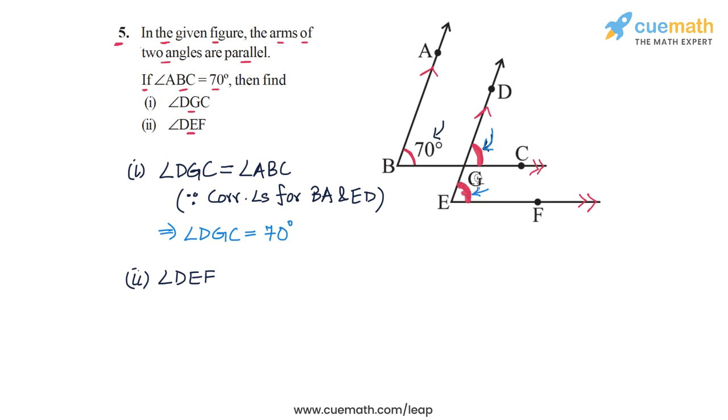And we see that angle DEF is equal to angle DGC. And this is because these two angles form a pair of corresponding angles. And this time the parallels are BC and EF. So these are the two parallels. And this means that angle DEF is also equal to 70 degrees because angle DGC is equal to 70 degrees.